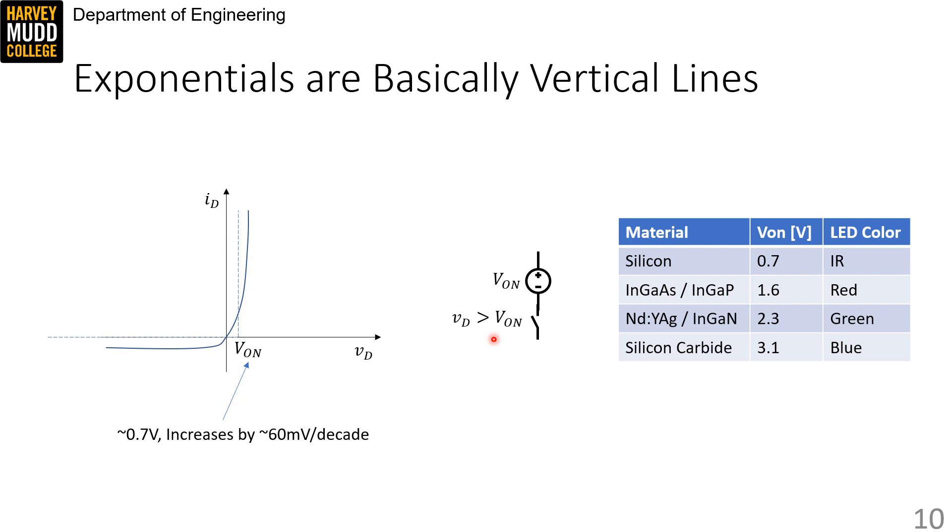Green LEDs are made of neodymium doped yttrium aluminum garnets, or indium gallium nitride alloys, and they have a turn-on voltage of about 2.3 volts. And finally, blue LEDs are often made of silicon carbide, and they have turn-on voltages of 3.1 volts.